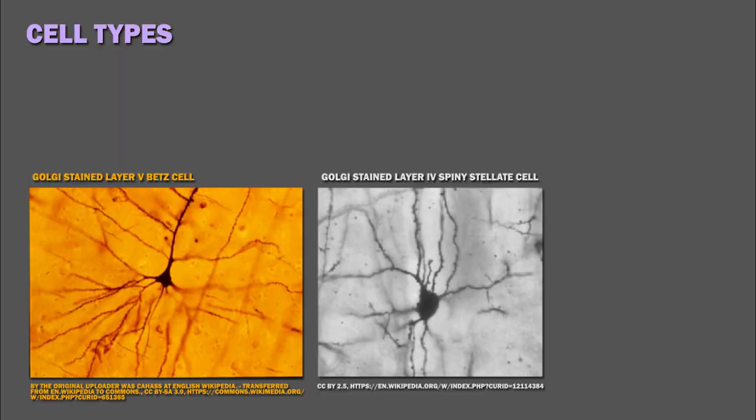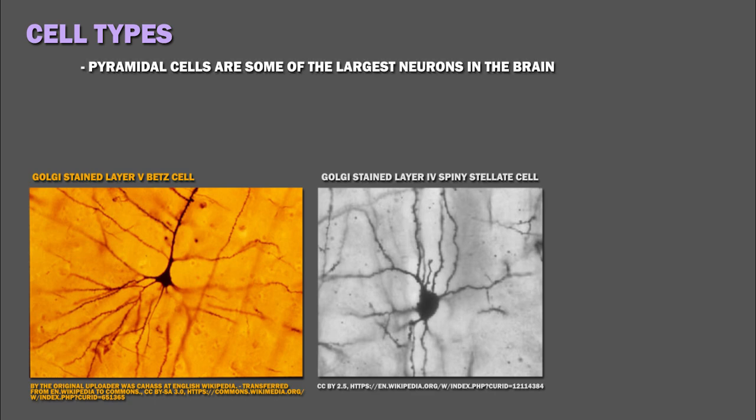Let's describe some of the cell types that are found in these six cortical layers. Pyramidal cells are some of the largest neurons in the brain and have long apical dendrites that extend towards the cortex surface, as well as a set of basal dendrites.